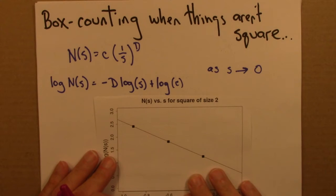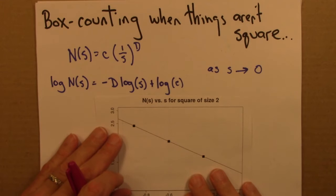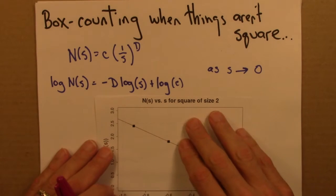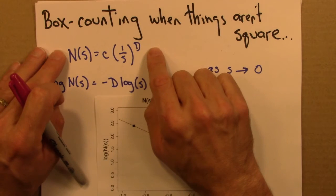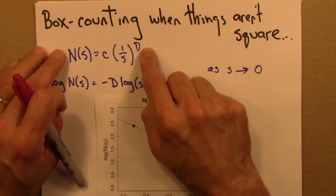In the previous video, we did box counting in a log-log plot to find the dimension of a square. Things worked out pretty nicely. As a reminder of what we did, we're working with this equation: N is c(1/s) to the d, where d is the box counting dimension.